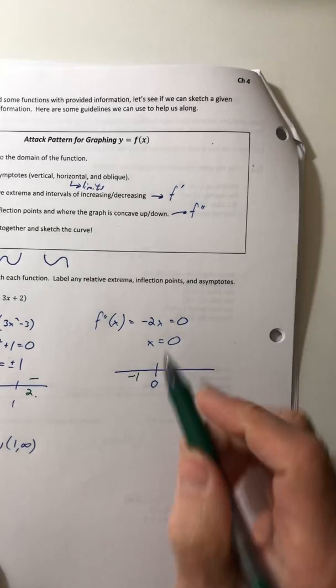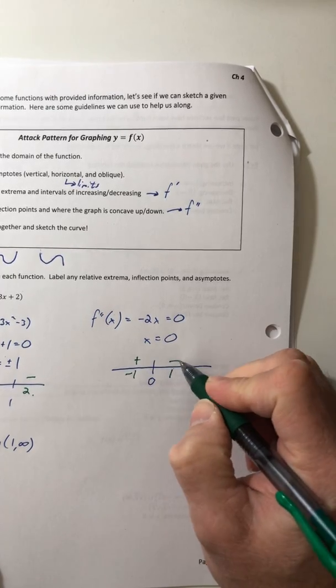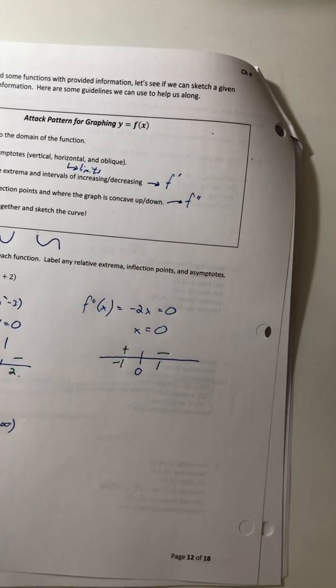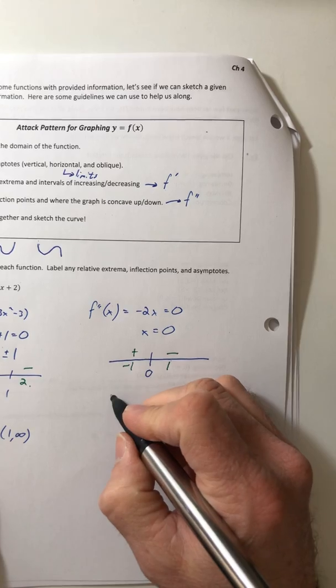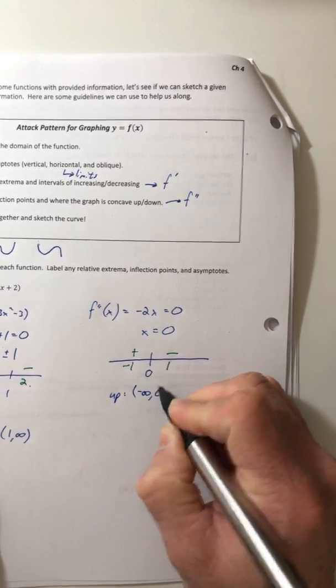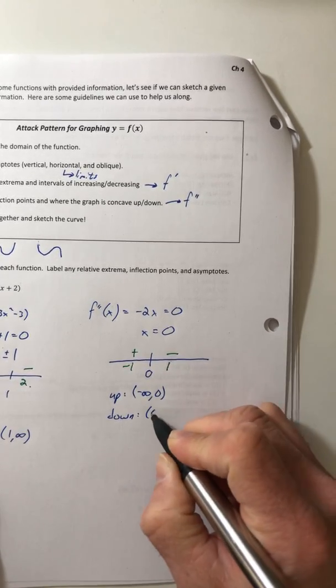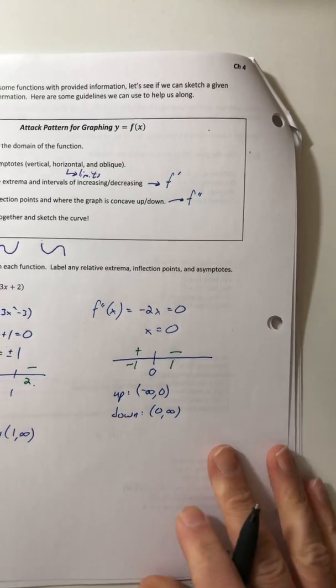Okay, so plug in the negative one into your second derivative, and it comes out as positive, plug in the one, comes out as a negative. So it's concave up from negative infinity to zero, and concave down from zero to infinity.